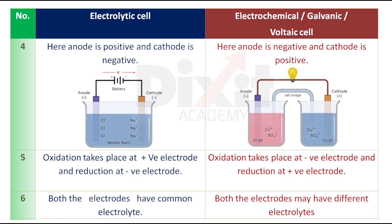Point number five: In an electrolytic cell, oxidation takes place at the positive electrode and reduction at the negative electrode. In an electrochemical cell, oxidation takes place at the negative electrode and reduction at the positive electrode.